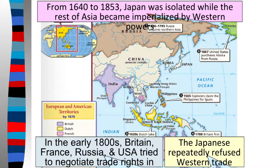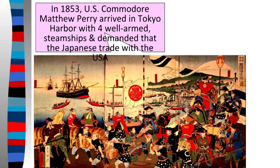That was good and well until 1853, when US Commodore Matthew Perry — not the guy from Friends — arrived to reopen trade with Japan. Matthew Perry arrives in Tokyo with four really strong steamships, which really shocked the Japanese. They didn't even know what a steamship was. When Matthew Perry came, he didn't do it nicely — he literally showed up with his big steamship and demanded that the Japanese trade with the US.